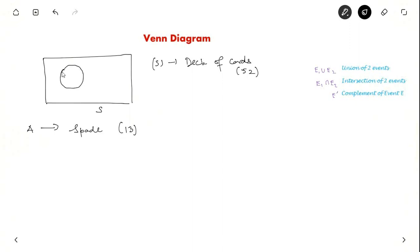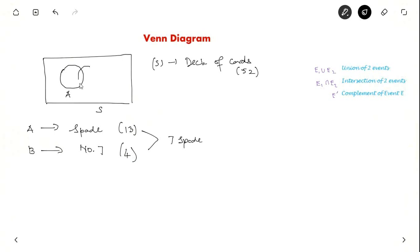In the sample space, Event A is represented by a circle which has 13 possibilities. Now we are saying another event B, which is picking up number 7, which has 4 possibilities. We know that there is also the 7 of spades, which is included in both events. So Event B will be part inside A and part outside A. This area is called A intersection B, which is the 7 of spades — only one card in this case.